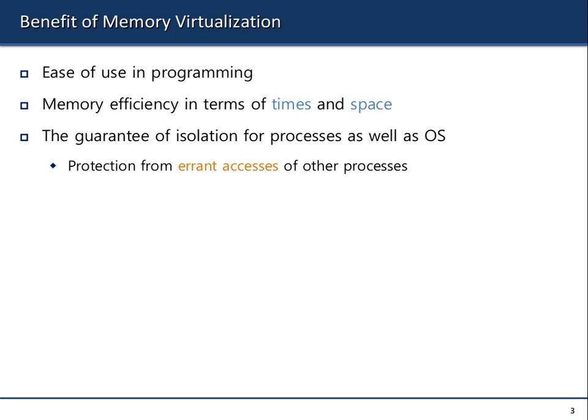The third benefit is the guarantee of isolation for processes as well as the OS. With virtual memory, you can enforce protection mechanisms. Even though processes A, B, and C all feel they have 4GB, the operating system can control it so that process A cannot touch the memory being used by process B, and process B cannot touch the memory used by process C. Later we'll look at how this is accomplished by the operating system.